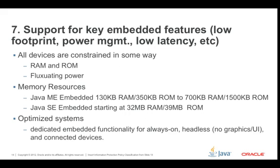When talking about Java SE Embedded itself, it can run in as low as 32 megabytes of RAM or 39 megabytes of ROM — pretty substantial for low memory resources — easy enough to run on any Raspberry Pi you would buy today. All these are ideally optimized systems, targeted for dedicated embedded functionality like Always On, Intermittent Supply, and Headless and Connected Devices.